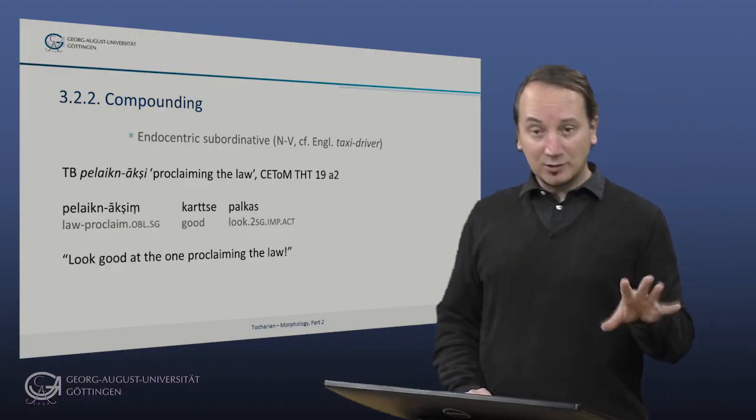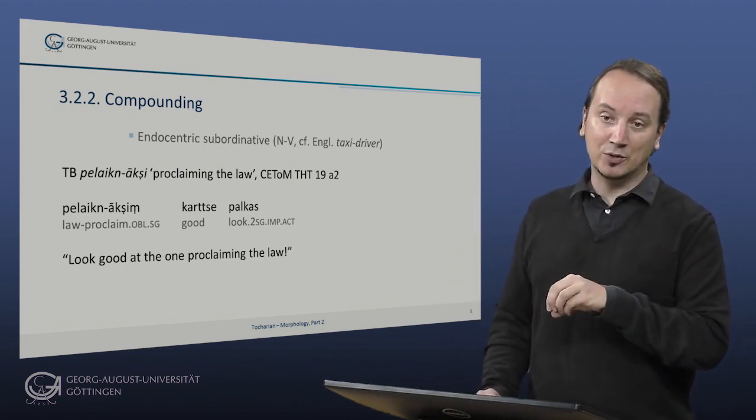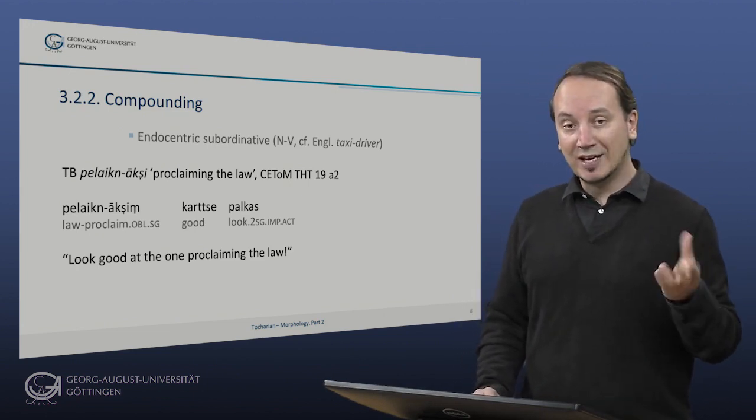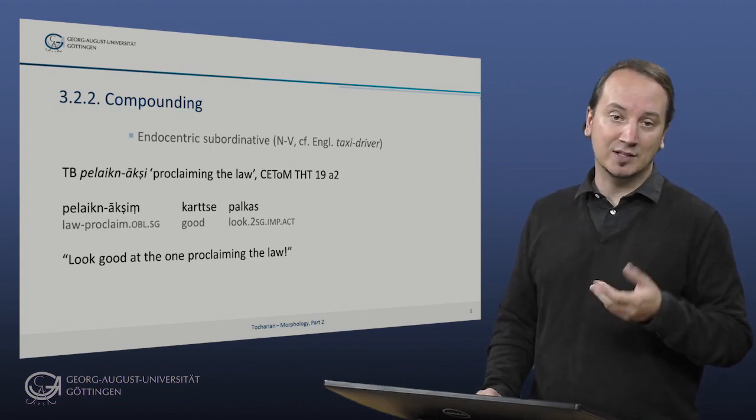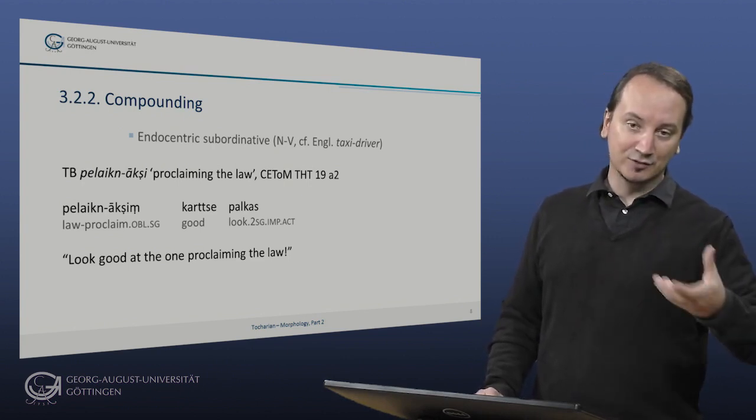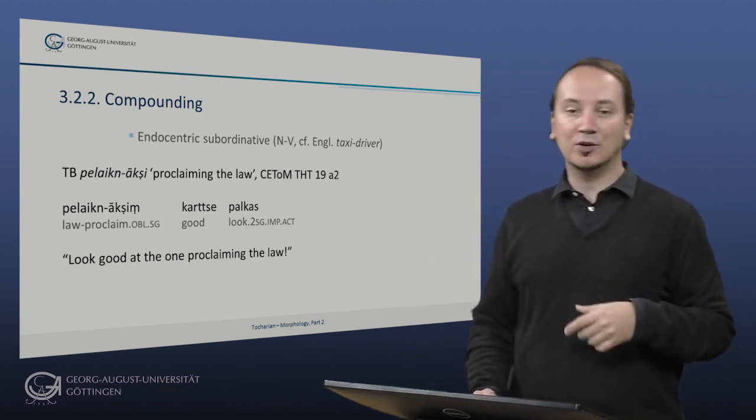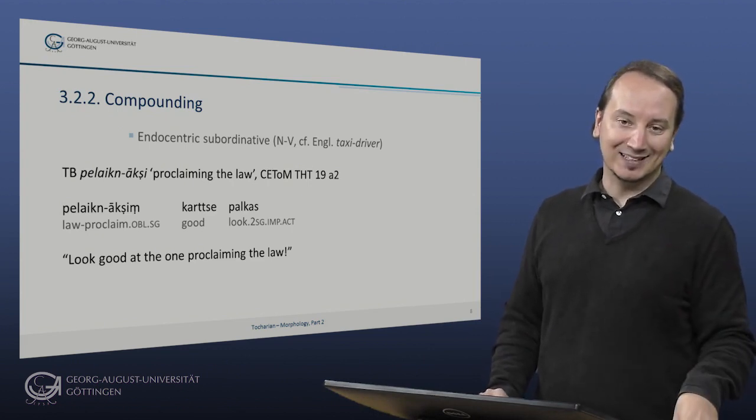Just a side note here, the exocentric equivalents of these types of compounds would on the one hand be the Indo-European root NV, so noun verb compounds of the Vedic Sanskrit vrtrahan, slaying the vrtra type, and on the other hand VN compounds of the Greek phereikos or the Italian portalettere type.